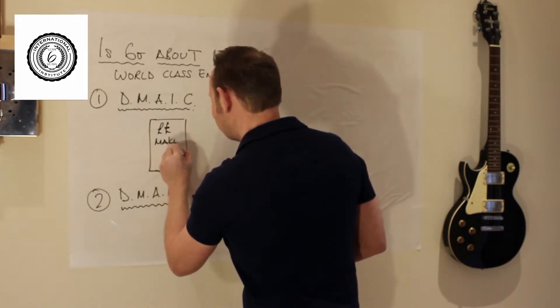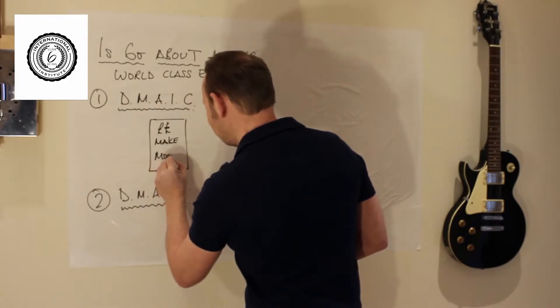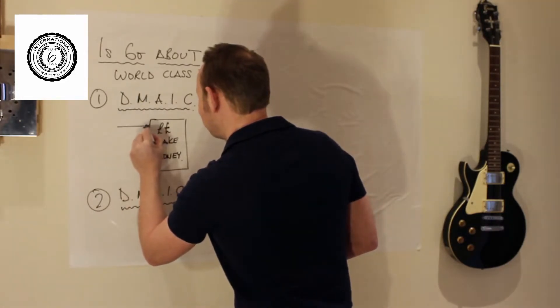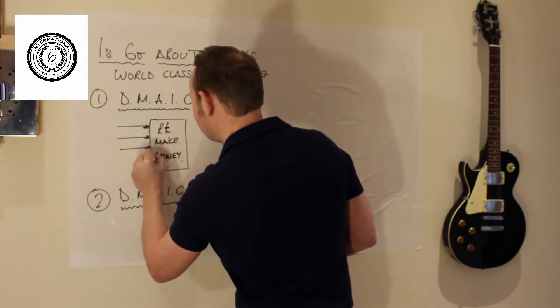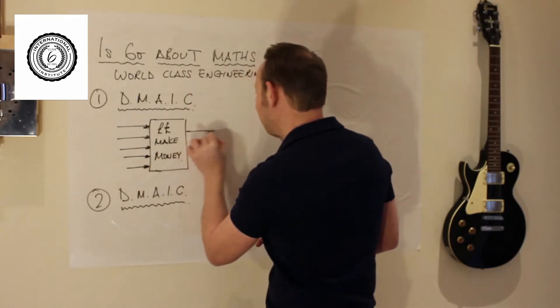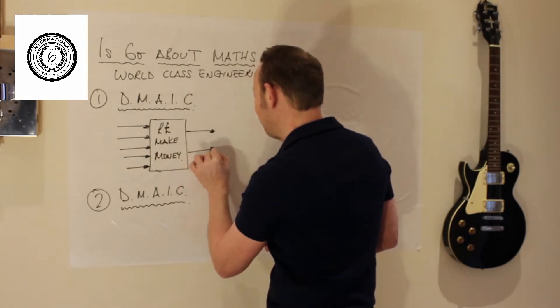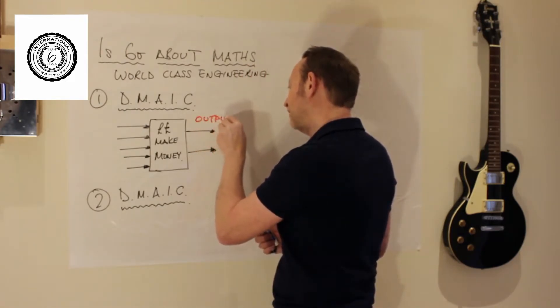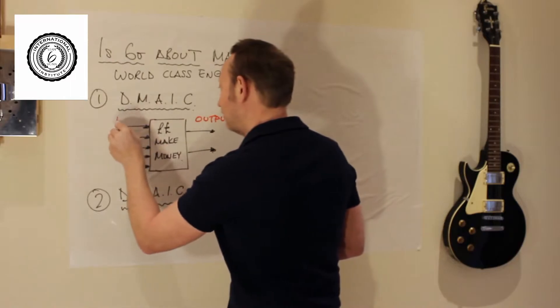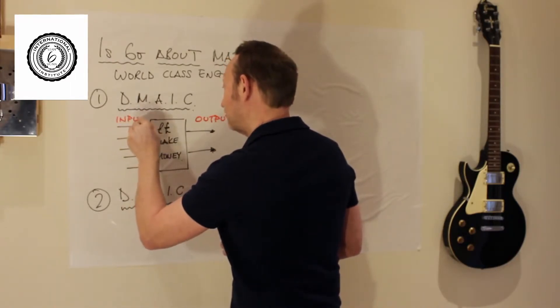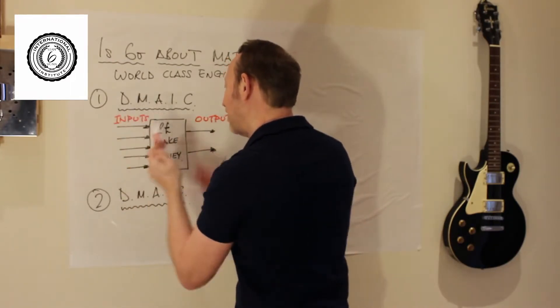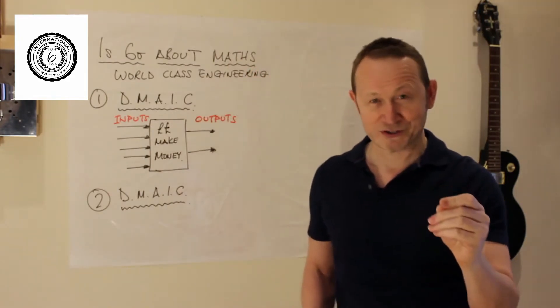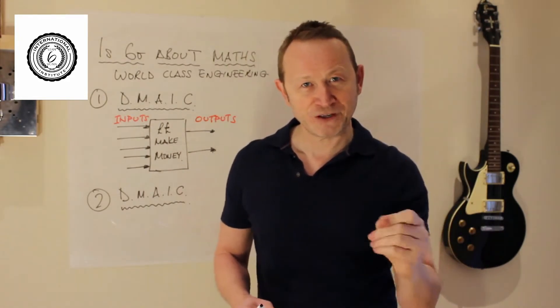You have a process and it's process thinking by the way, as well as physics. You want the process to make money, to make as much money as possible. You have a series of inputs and of course a series of outputs where hopefully you are trying to please the customer. So you have inputs and outputs. And that is always the centrepiece of Six Sigma. It's about physics.